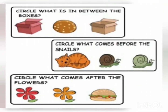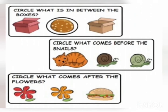So children, now you know what comes before, after, and in between. Now we will do some activities. Can you see there are so many boxes? First, it says circle what is in between the boxes. Then, circle what comes before the snails. Circle what comes after the flowers. What comes between the boxes? Yes, a cookie! Similarly, you will circle what comes before the snails and also circle what comes after the flowers.